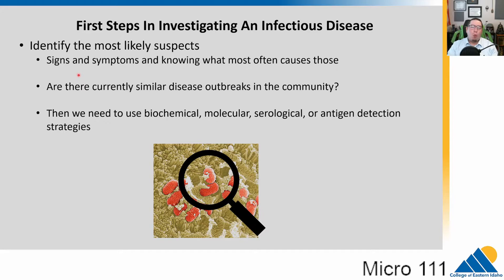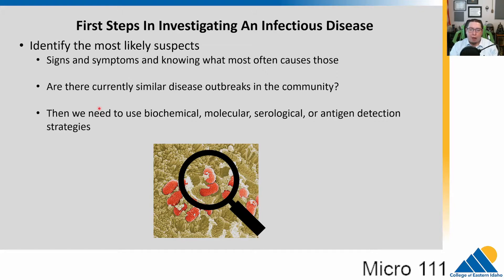We also take into consideration what is going on in the community — being aware of public health is critical. Are there currently outbreaks of certain diseases? In the past few years we've seen whooping cough, RSV, and many things, particularly after the pandemic when we stopped social distancing. We also need to know what biochemical, molecular, serological, or antigen detection strategies we can use to rule out or isolate whatever we think is growing there.